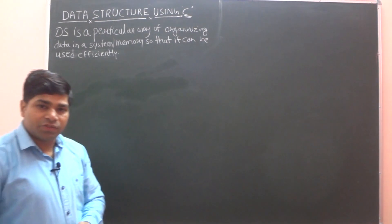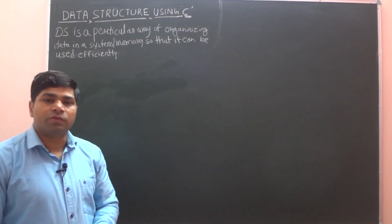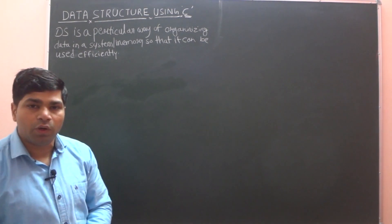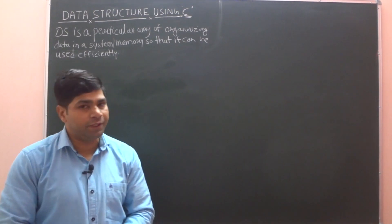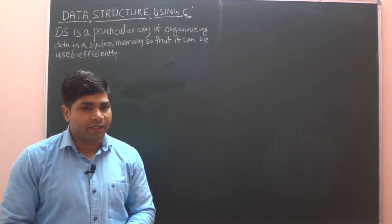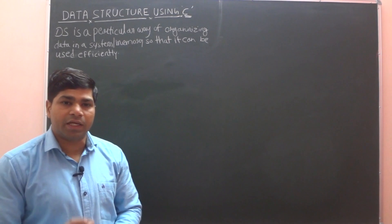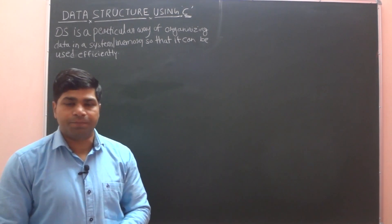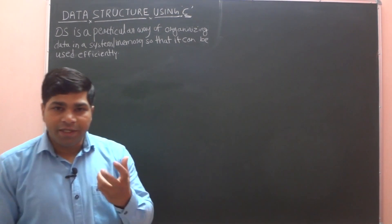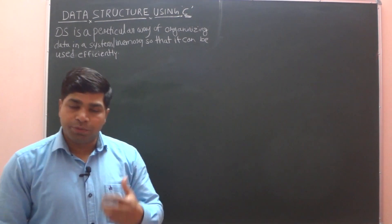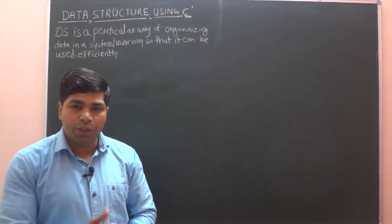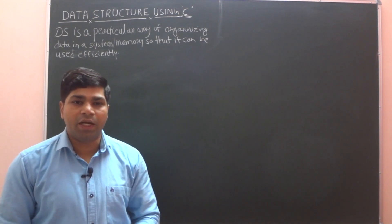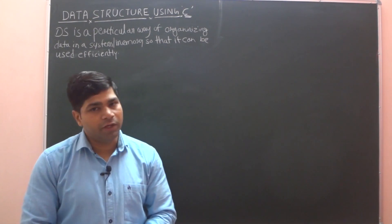What is data structure? First we discuss what is data. Data are simply a value or set of values of different types, which are called data types — like integer, character, float, pointer, etc. Basically data can be anything, like audio data, video data, raw facts and figures.